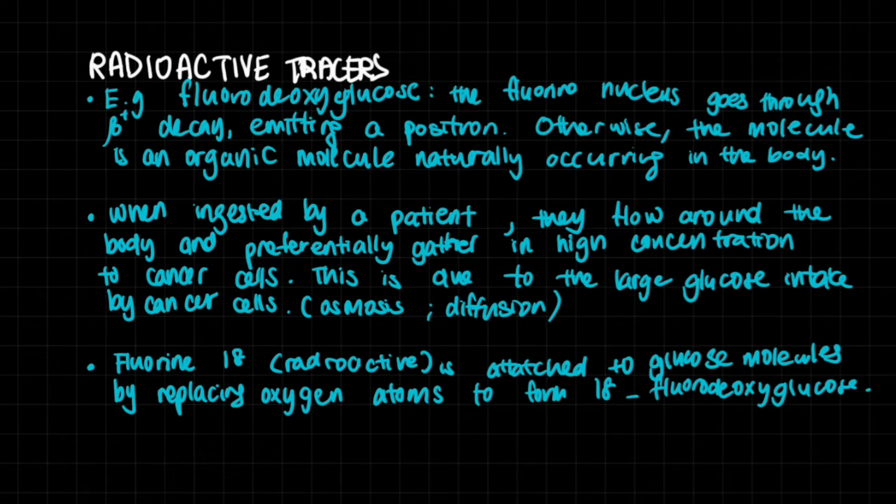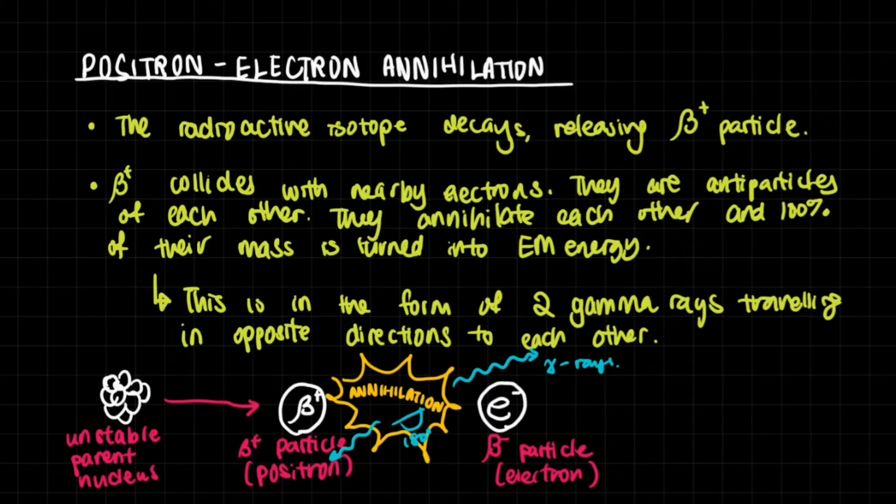That means that this guy is disguised as a glucose molecule and he's going to gather around whatever cancer cell there is, if it does exist. So he's gathered at a cancer cell and he's found out where it is. Then what happens?